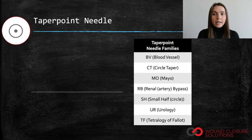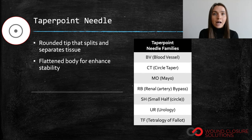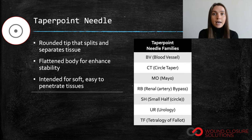Taper point needles have rounded tips that effectively split and separate tissue, and flattened bodies to allow for enhanced stability. These needles are generally indicated for soft, easy to penetrate tissue, including but not limited to peritoneum, abdominal viscera, subcutaneous tissue, blood vessels, and bowel.